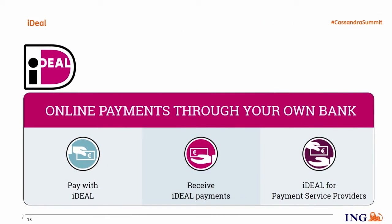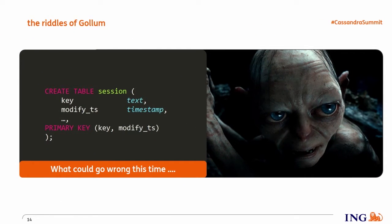As we grow in these adventures, we gain confidence and start using Cassandra in more critical use cases. iDEAL payments is essentially web shop payments — instead of a credit card, you do a direct bank transfer. You have the web shop, a mediator, and the banks. We used Cassandra to handle sessions, because with load balancers and switches between data centers, we wanted an active-active solution for session management. The model is simple: a session ID plus a bunch of data. We use modify timestamp as the clustering column and get the latest session state by ordering on time.